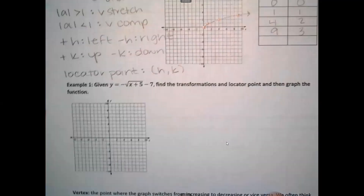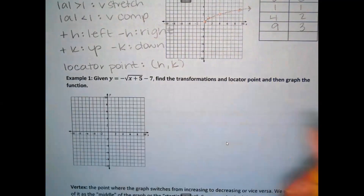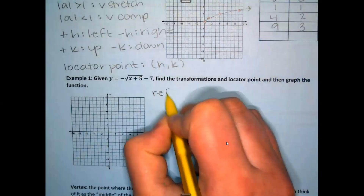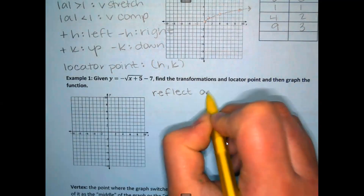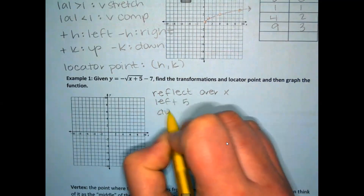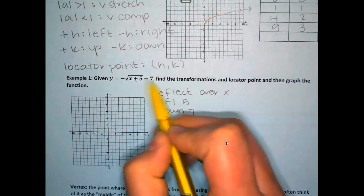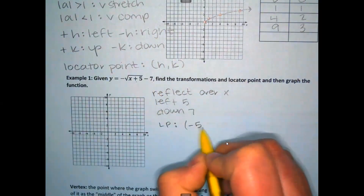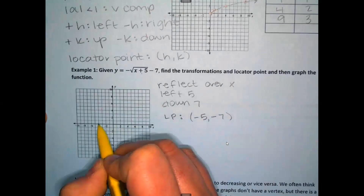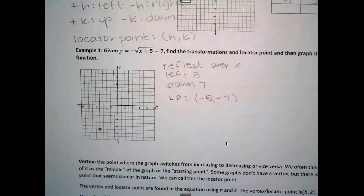We do not have a vertex — this point right here is called the locator point. It's not really the middle of the graph; it's more like the starting point. You get it from the h and k values. For example: y = -√(x+5) - 7 — the transformations are reflect over x, left 5, and down 7. The locator point is (-5, -7). I'll go left 5, down 7, put a dot there, and then graph this on Desmos.